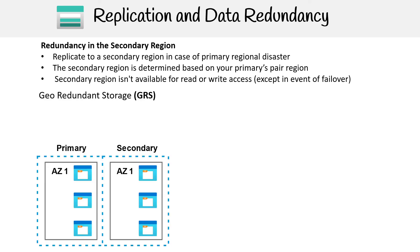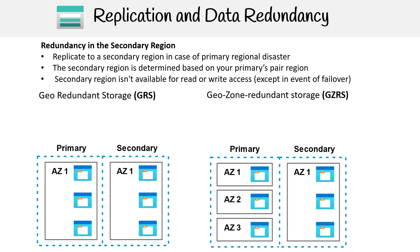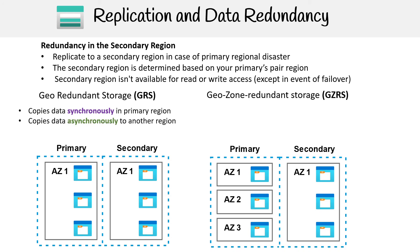Let's talk about GRS and GZRS. You'll notice by the graphic they look slightly different, but you can get the idea based on our previous primary storage tier. Data is copied synchronously within the main primary region, and then data is asynchronously copied to another region.